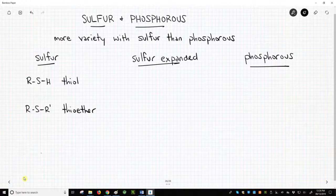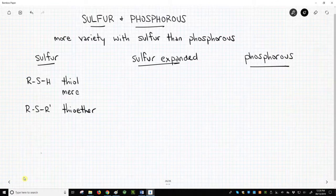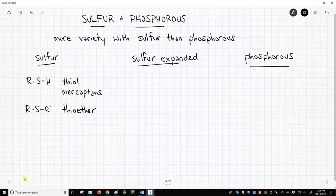Thiols are also known as mercaptans, and thioethers are sometimes called sulfides.